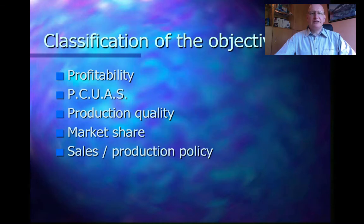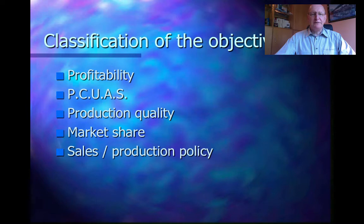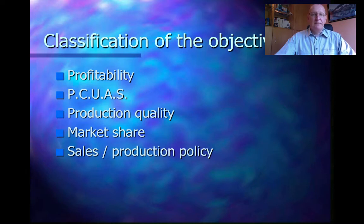Your strategy will be based on a vision and a mission. You have five objectives to classify: profitability, the PCUAS which is the production cost price for all the units available for sale, your production quality, your market share, and the sales and production policy. The main objective gets five points and the last one only one point.